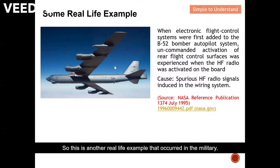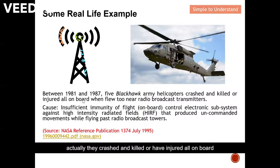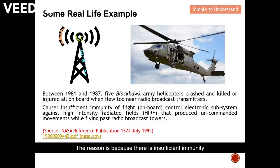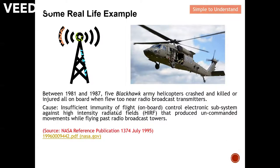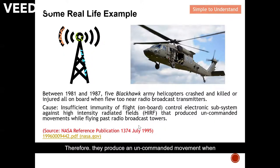Between 1981 and 1987, five Black Hawk army helicopters crashed, killing or injuring all on board, when they flew too near a radio broadcast transmitter. The reason was insufficient immunity of the flight control equipment subsystem against high-intensity radiated fields, meaning they did not provide enough shielding against high-power radiated fields, resulting in uncommanded movement when flying past a radio broadcast tower.